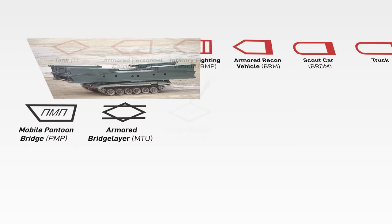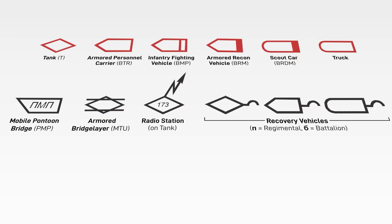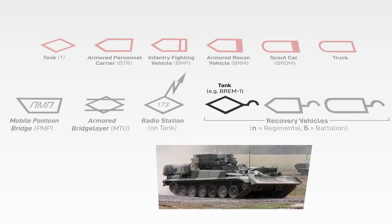Modifiers depict a specialty function. If you add a little lightning bolt with an arrow, that means the vehicle is a radio station, a command vehicle normally acting as the command post for units battalion-sized and larger. If you add a little hook on the tail, it's a recovery vehicle.